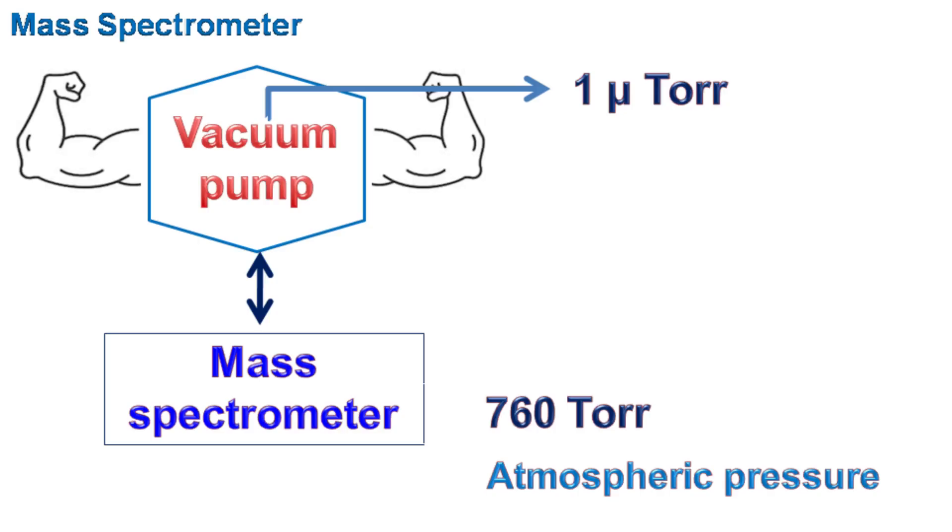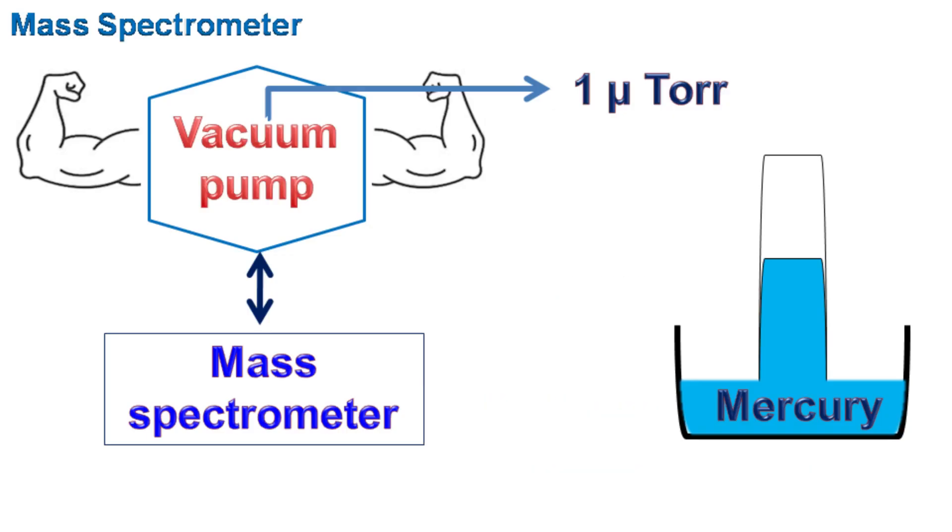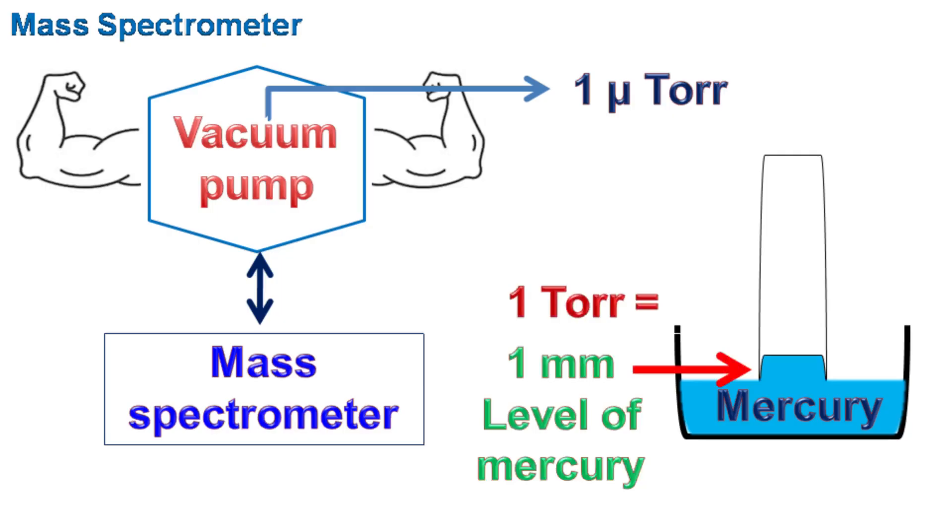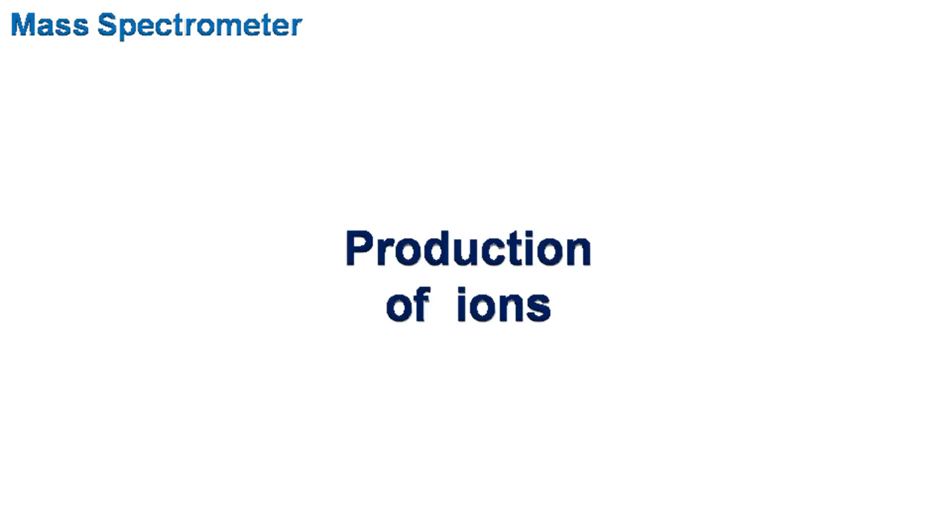The atmospheric pressure at sea level is usually 760 torr. This is equivalent to 760 millimeters of mercury in an inverted column. One torr means the pressure is now up to one millimeter of mercury in the inverted column, and one micro torr is a negligible amount of pressure.